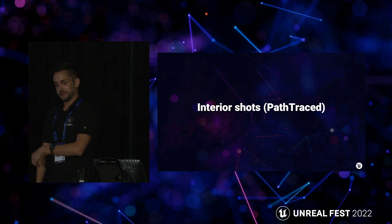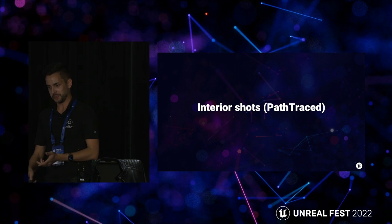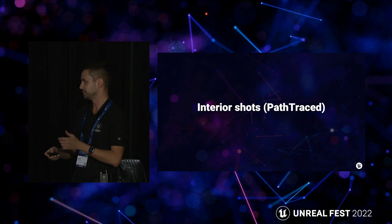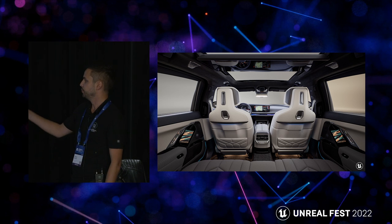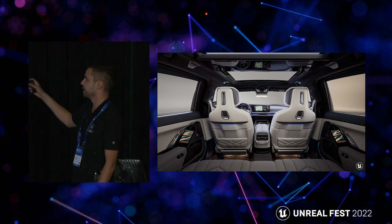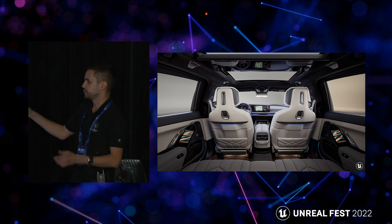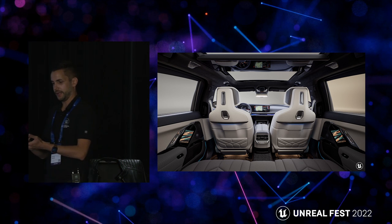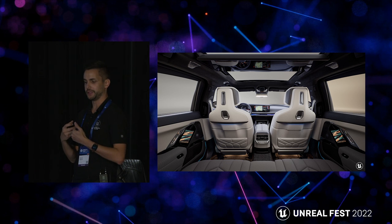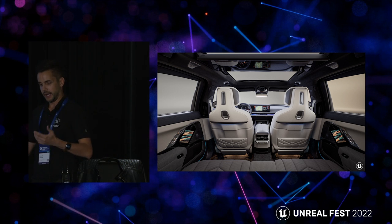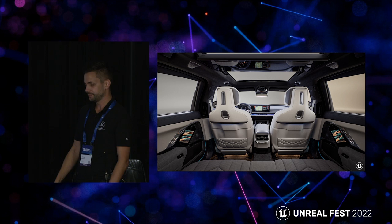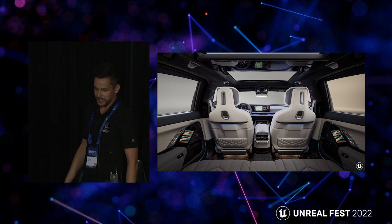Now going into the interior shots, which are also path traced — my favorites because there's so much ambient lighting in the scene. This is the interior of the 7 Series; we have a lot of mood lighting. The sensation I wanted was you being in the backseat, being chauffeured around — bringing that inviting tone to the scene. For the Movie Render Queue settings: renderer set to Path Tracer, anti-aliasing set to None, spatial sample to 40, temporal sample to 40.